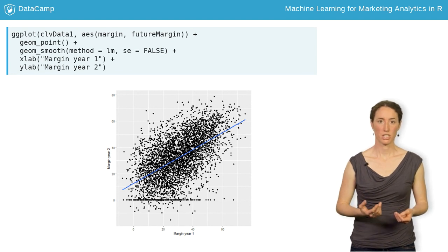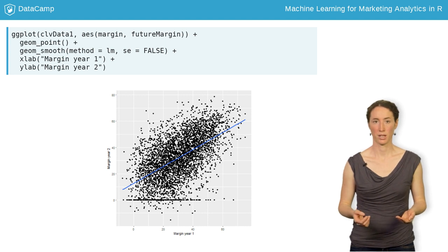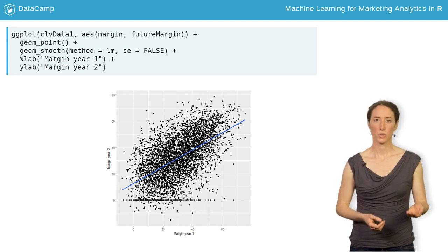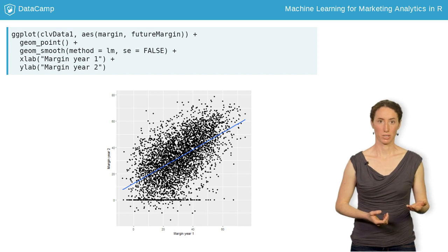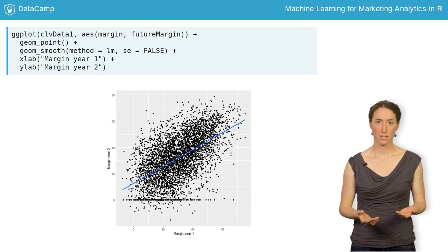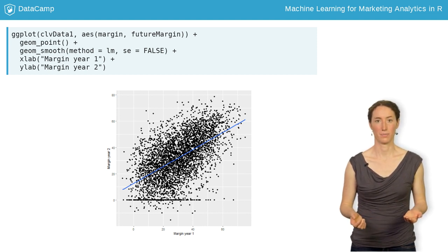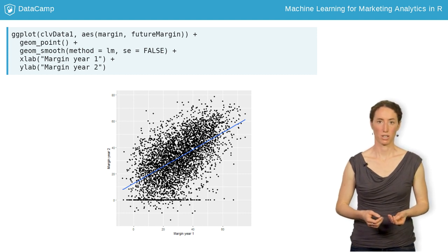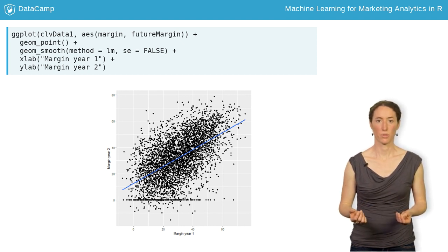The ggplot function from the ggplot2 package gives us a nice visualization of the relationship. Here, we produce a simple scatterplot of the observations using our CLVData1 dataset. The data is the first argument, and we specify margin as the x-axis and future margin as the y-axis in the AES call. This is the second argument to ggplot. We also use geomSmooth with method equals lm to fit a linear regression line through the data cloud.